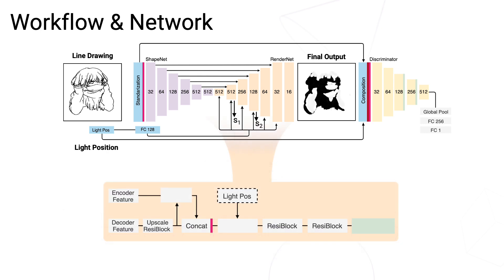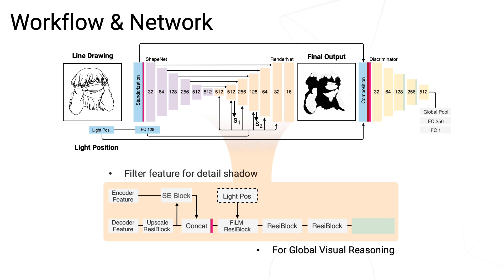We build a relatively deep decoder to rebuild the 3D information in latent space. Whenever there is an embedded lighting direction inputted, we use a FiLM block to enhance the visual reasoning. When there are skip connections from the encoder, a squeeze and excitation block filters out redundant information. The coordinate channel, marked in red after concat, enables the learning of 3D spatial information. At the end of each stage of the decoder, except the final stage, a self-attention layer is added to enhance holistic visual reasoning.